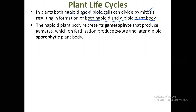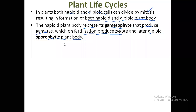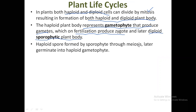The haploid plant body represents the gametophyte that produces gametes. These gametes are fertilized together to produce the zygote. This zygote, which is diploid in nature, will develop later on into a diploid sporophytic plant. The haploid gametophyte produces haploid gametes; these male and female gametes fuse together to form the zygote, which later on develops into the diploid sporophytic plant body.